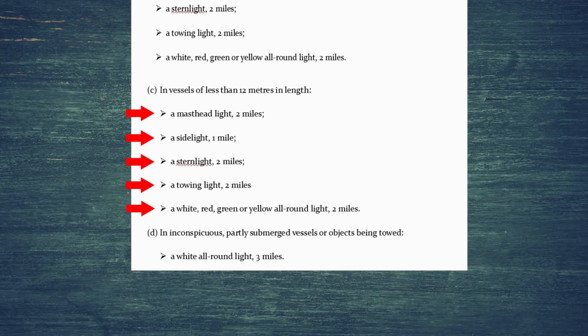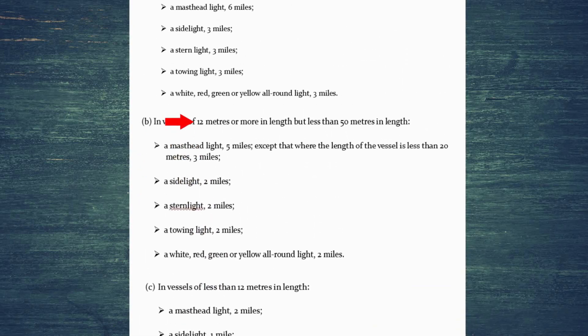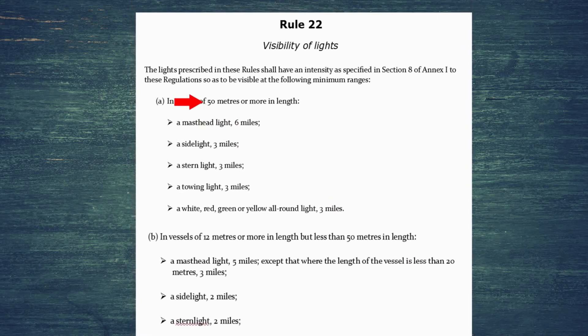Of course, each paragraph talks about a different length. The bottom one covers vessels less than 12 meters, the middle one between 12 and 50 meters, but it changes the masthead light if you're less than 20 meters. So between 12 and 20 meters, and then finally vessels more than 50 meters is covered in the first paragraph.